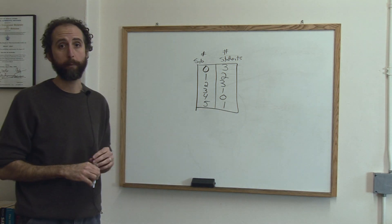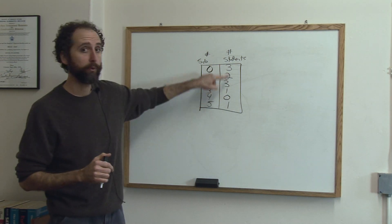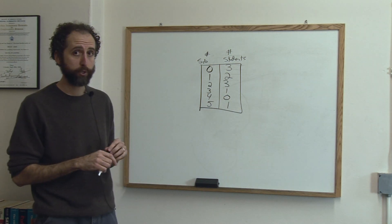This is called a frequency table. Sometimes it gives people a little trouble because they're not sure what to make of these numbers. So this is the way we interpret it.